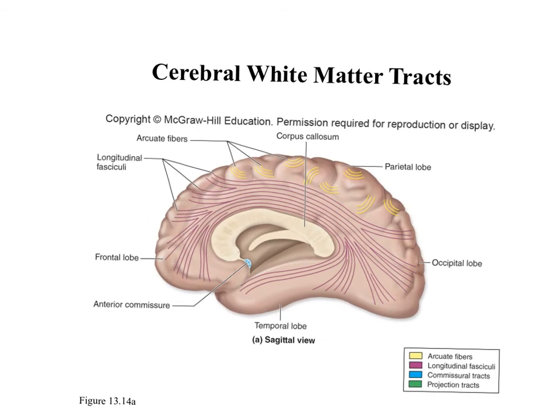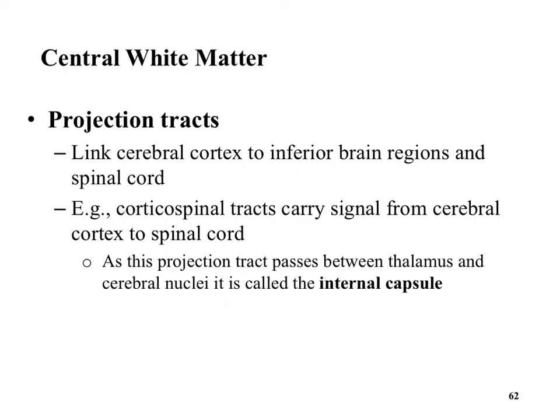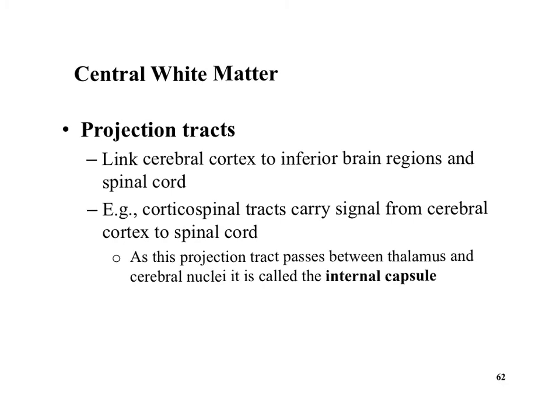Arcuate fibers connect nearby gyri; longitudinal fasciculi connect larger pieces. You don't see commissure tracks when looking at only one hemisphere. Projection tracks link the cerebral cortex to the inferior brain regions and the spinal cord.